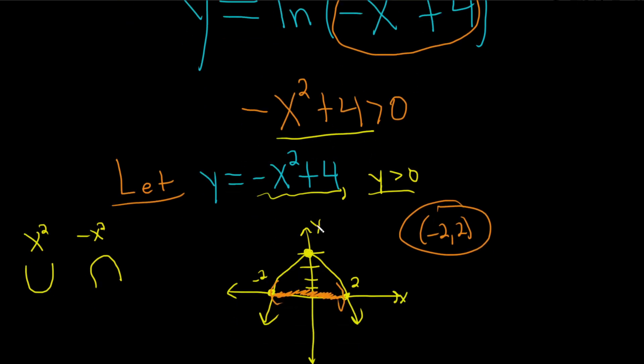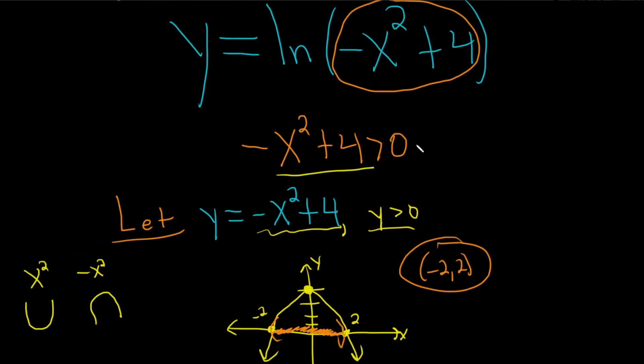We looked at the graph. And then the question becomes, when is the graph positive? In other words, when is this picture above the x-axis, right? Those are the positive y values. Well, these are the x values for which the y values are positive. So negative 2 to 2. And that coincidentally answers our original question.